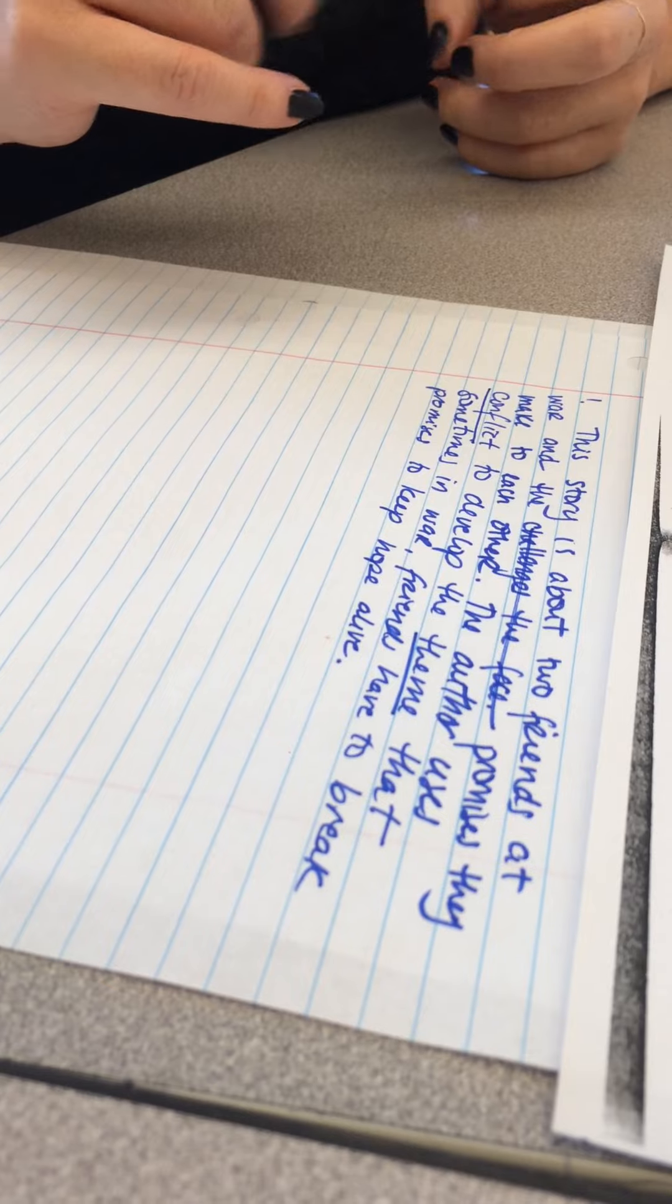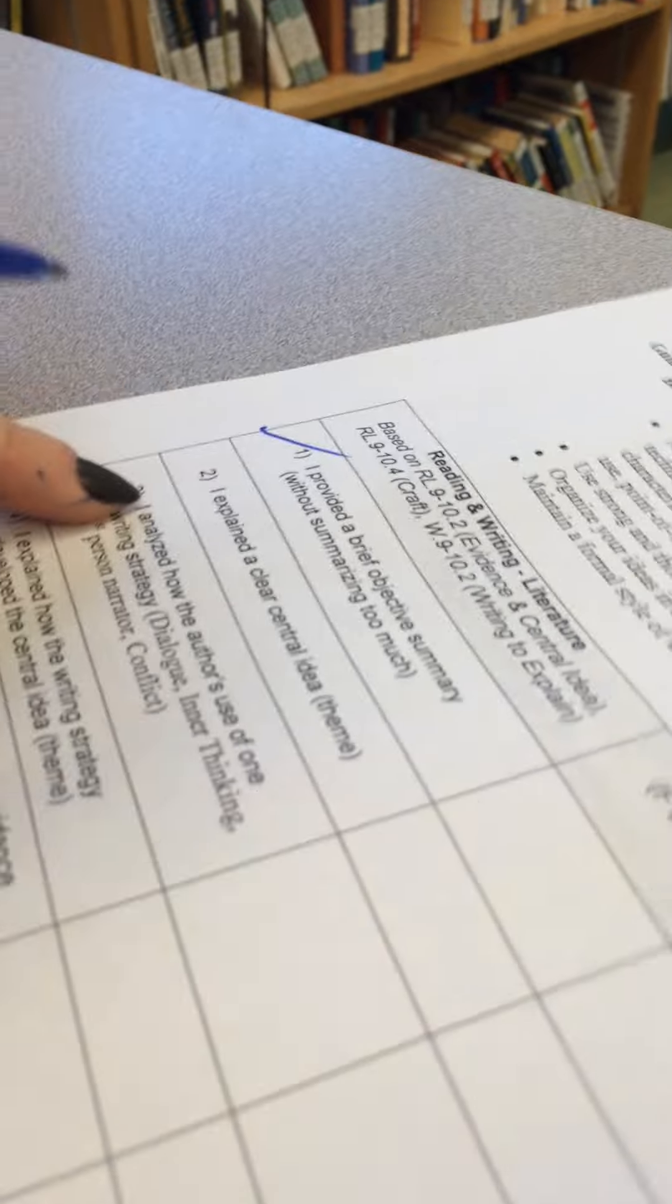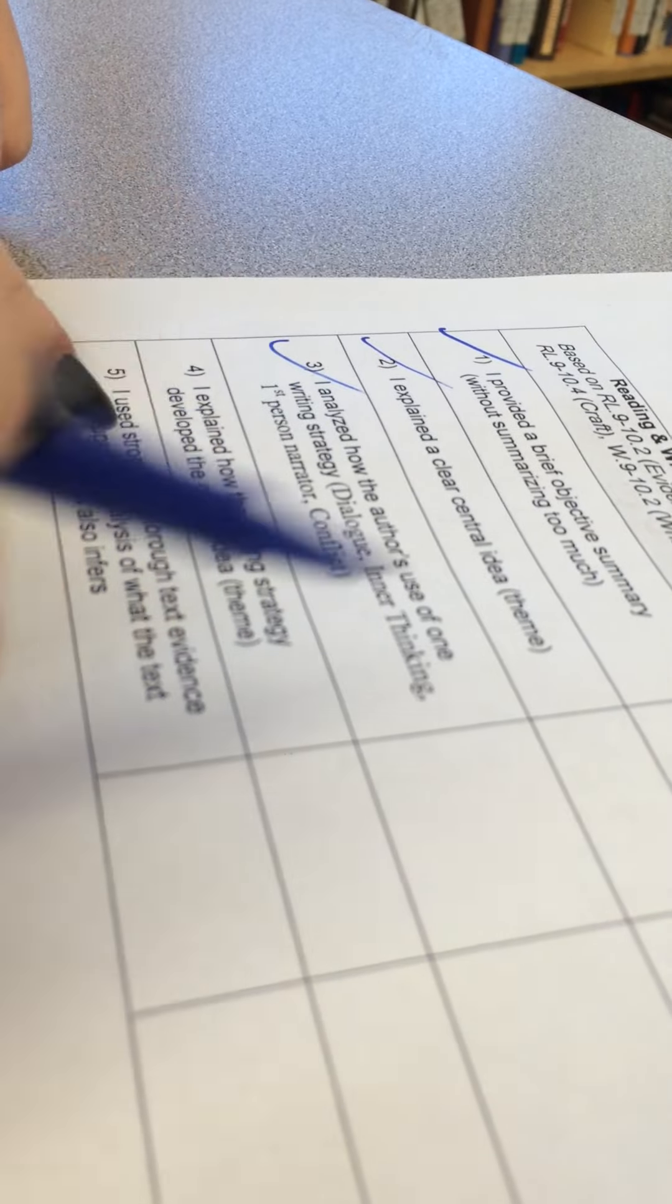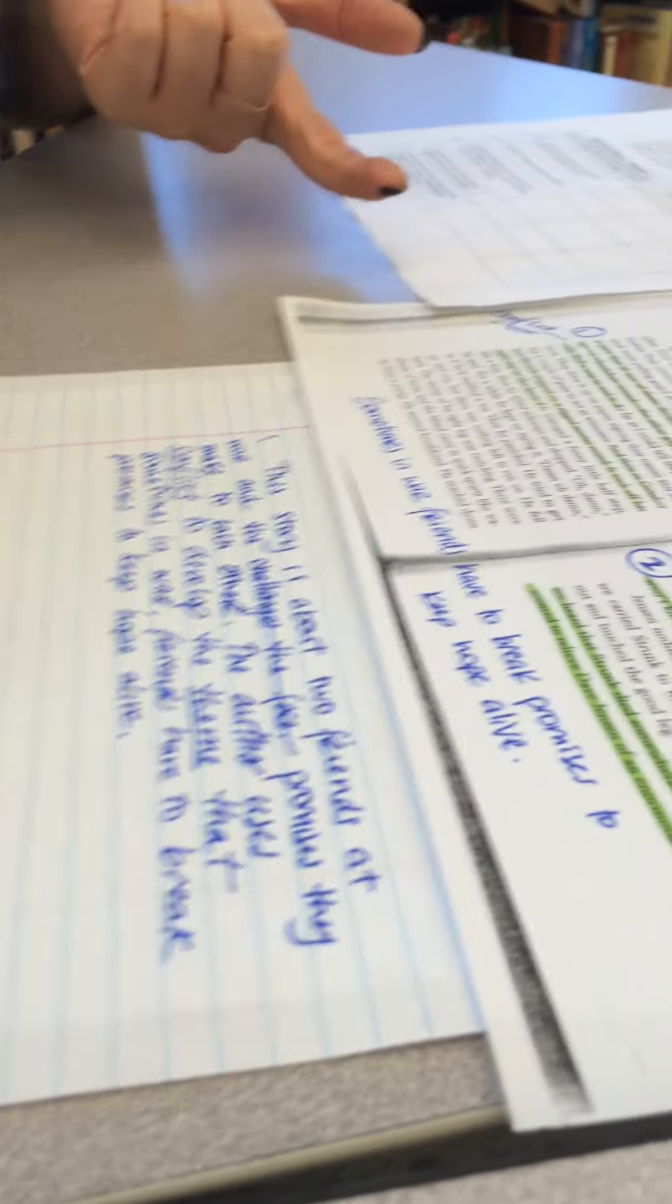So what I have to do right now, I need evidence. So here I have this, I explain my central idea, I analyze the author's use of writing astrology. Now I have to explain the evidence. I'm not going to re-read, I'm going to use the evidence that I picked from before.